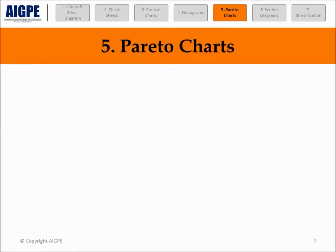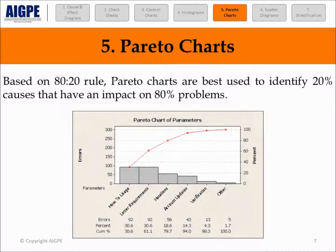Pareto charts were developed by Wilfredo Pareto and are based on the 80-20 rule, where 80% of problems are caused by 20% of causes. They help identify and quantify the top root causes from the trivial many. Pareto charts are used for discrete data and require data collation such as defects, errors, and count data. They provide an easy-to-understand graphical representation, allowing users to easily infer results and receive immediate notification of findings.